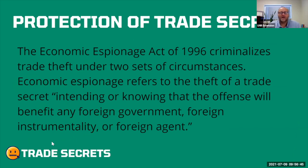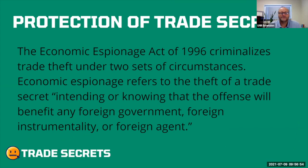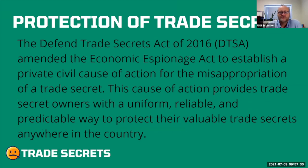There are two laws that protect trade secrets. The Economic Espionage Act of 1996 criminalized theft of trade secrets when the offense intends to benefit a foreign government, foreign instrumentality, or foreign agent — protecting our intellectual property from going to foreign countries. The Defend Trade Secrets Act of 2016, known as DTSA, establishes uniform, reliable, and predictable protections for trade secret owners anywhere in the country. These two laws really protect trade secrets here in the United States.